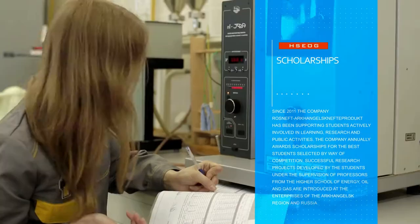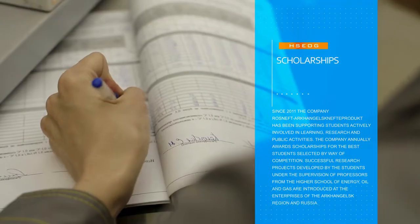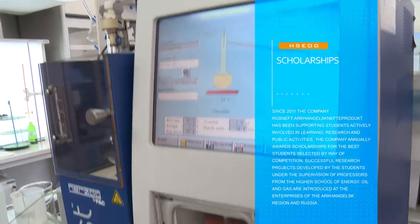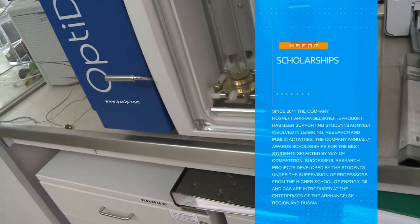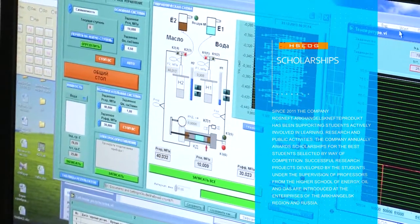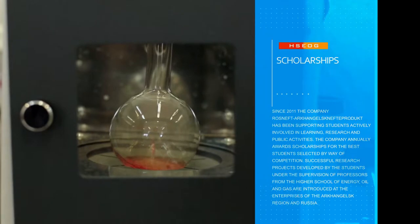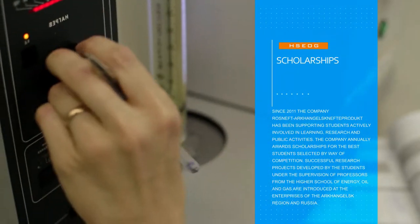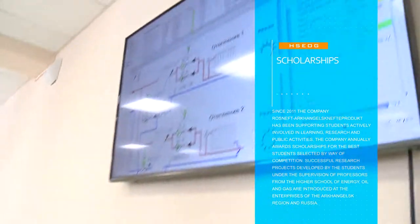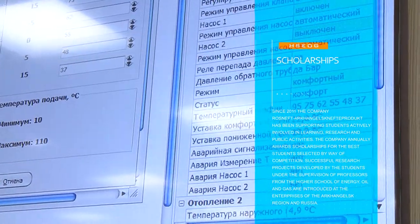Since 2011, the company Rosneft has been supporting students actively involved in learning, research and public activities. The company annually awards scholarships for the best students selected by way of competition. Successful research projects developed by the students under the supervision of professors from the High School of Energy, Oil and Gas are introduced at the enterprises of the Akangosk region and Russia.